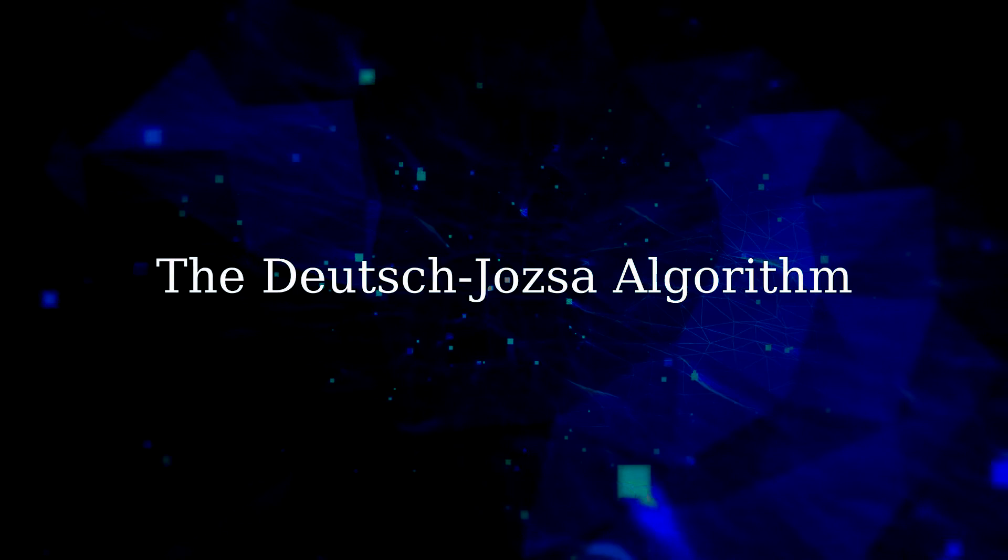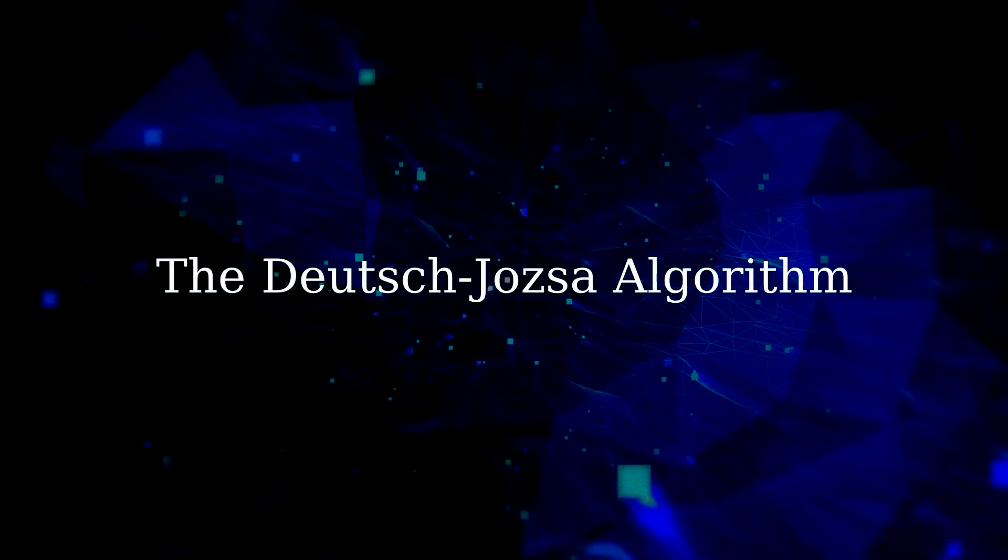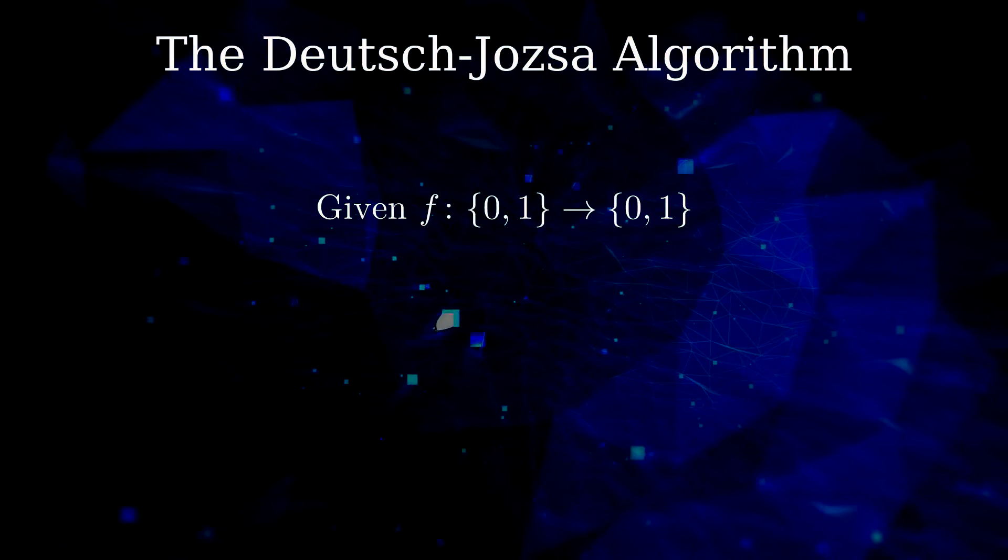The algorithm solves the following problem. We have given a function from 0 and 1 to 0 and 1, and we want to know if this function is constant or not.